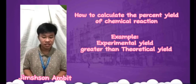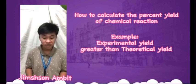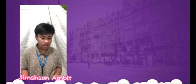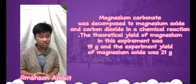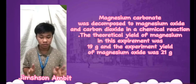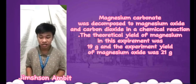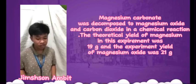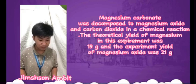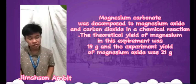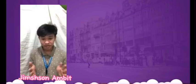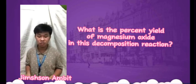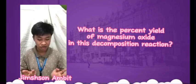Now, how do you calculate the percentage yield when the experimental yield is greater than the theoretical yield? Let's say magnesium carbonate was decomposed to magnesium oxide and carbon dioxide in a chemical reaction. The theoretical yield of magnesium oxide in this experiment was 19 grams, and the experimental yield was 21 grams. What is the percent yield of magnesium oxide in this decomposition reaction?